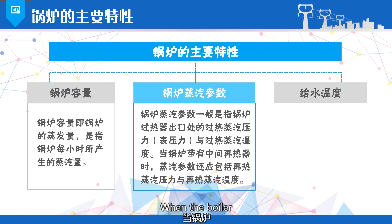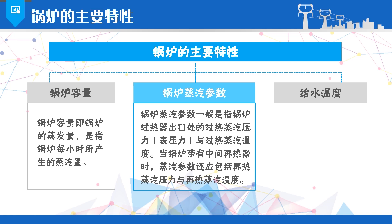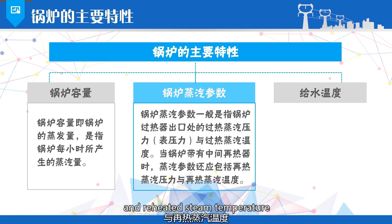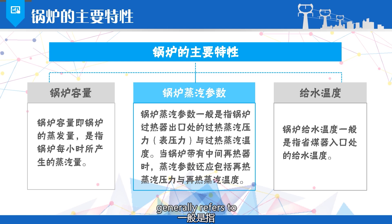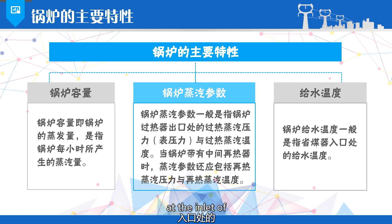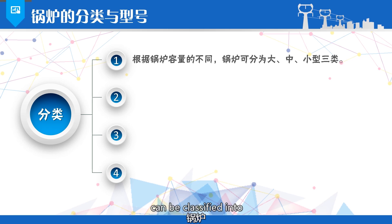When the boiler is equipped with an intermediate reheater, the steam parameters should also include the reheated steam pressure and reheated steam temperature. The boiler feed water temperature generally refers to the feed water temperature at the inlet of the economizer.